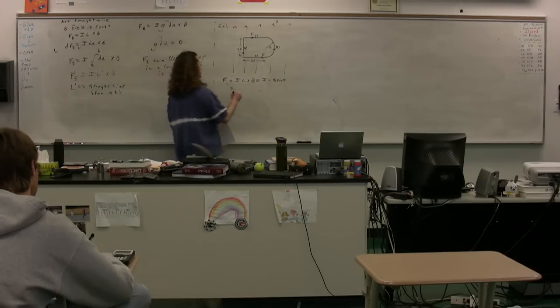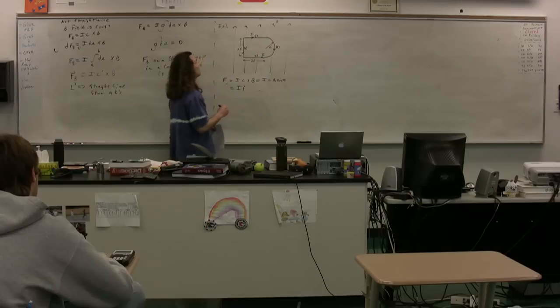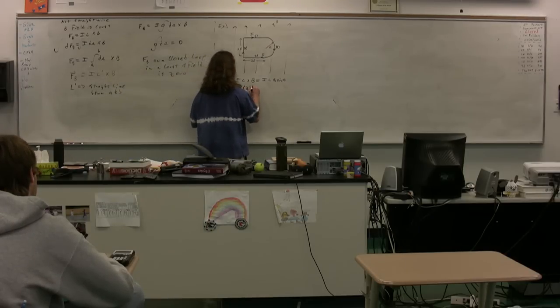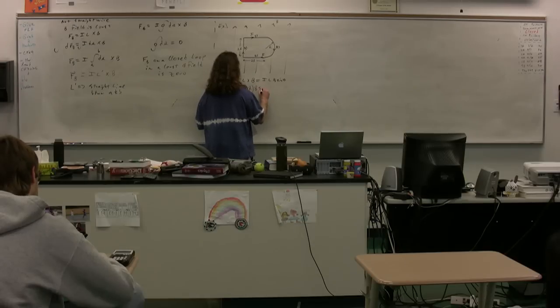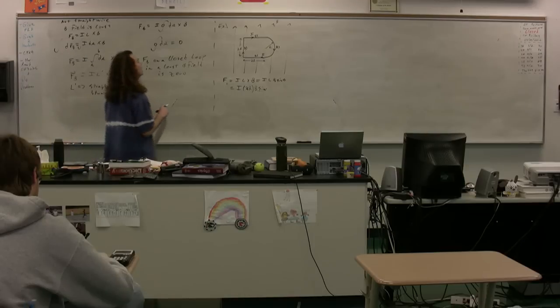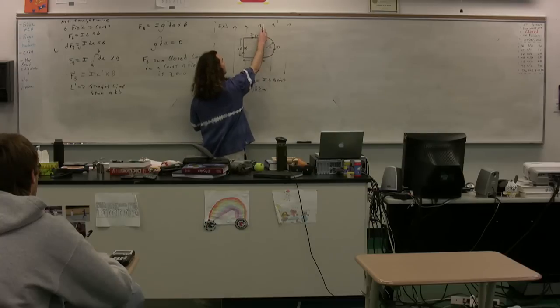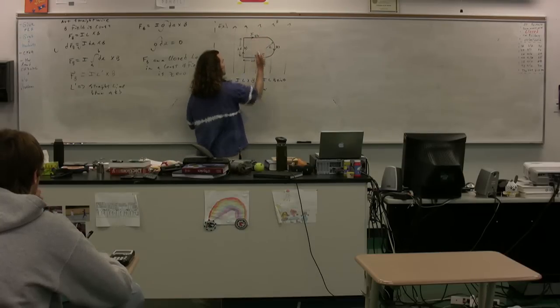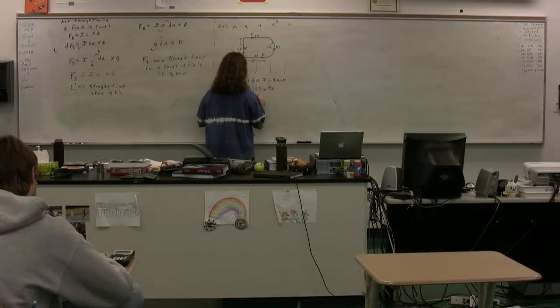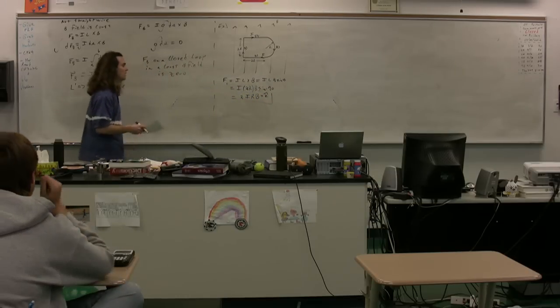So current, I don't know, it doesn't really matter, we're not going to put numbers on here. Current times the length. What is the length of wire 1? Times 2r. Times 2r. Times the magnetic field, which is B, times the sine of the angle. What is the angle here? 90 degrees. The angle between the length of the wire and the magnetic field. So this right here is our 90 degrees. So we have 2 I R B, and we identified the direction as the positive k direction. The force on 1.